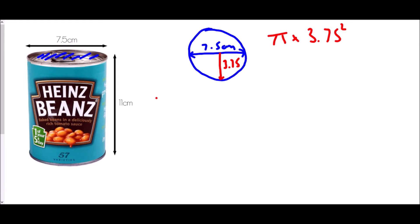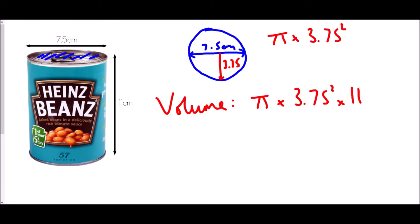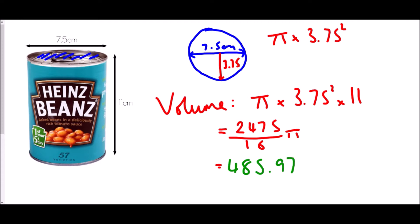Because if I want to get the volume, I'm going to have to multiply the area of the cross section — which was pi times 3.75 squared — by the length, which in this case is 11. If I type all of that into the calculator: pi times 3.75 squared times 11. I get 2475 over 16 pi. Not a particularly nice answer there, so let's change it into a decimal: that comes to 485.97 to two decimal places centimetres cubed.